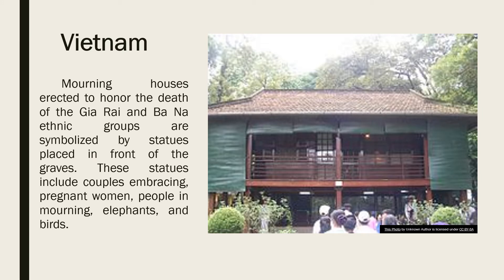Mourning houses in Vietnam are erected to honor the death of the J'rai and Banna ethnic groups and are symbolized by statues placed in front of the graves. These statues include a couple embracing, pregnant women, people in mourning, elephants, and birds.